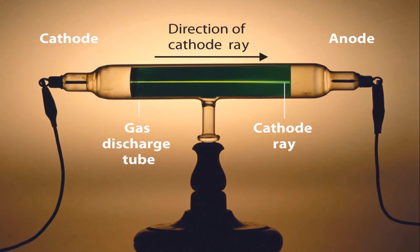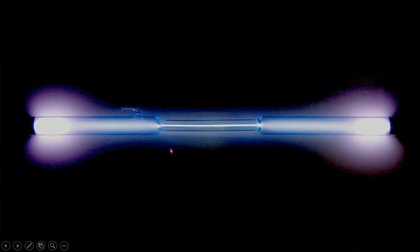Thompson and some others made some experiments on cathode rays between the years 1895 and 1897. This changed the definition of atom completely.